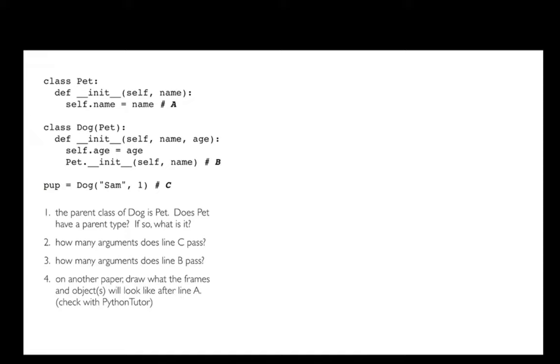First question is: the parent class of Dog is Pet, and so does Pet have a parent type? If so, what is it? Well, first off, I'm not explicitly passing anything in, but there's an implicit type. When I don't say what it is, then the type is object. Object is the name of the parent class of all other classes, perhaps confusingly. So there is a type and that's object.